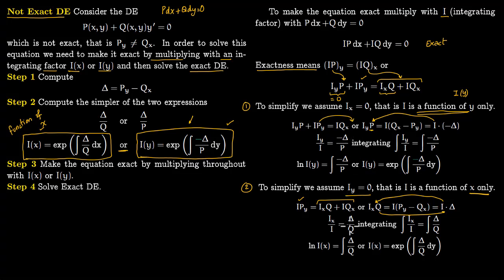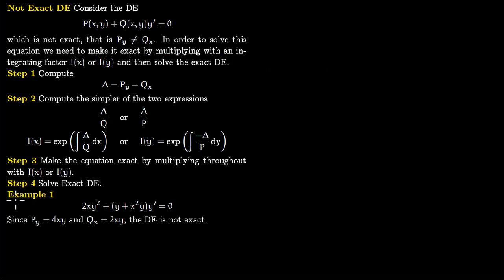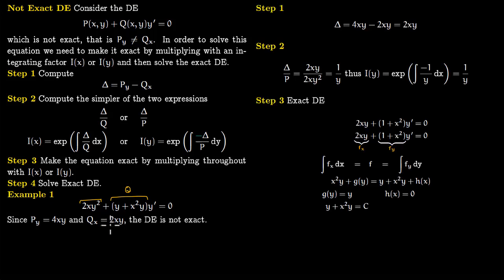These two formulas guarantee the equation becomes exact by definition of how they were derived. Now let us look at two examples. The first example is a given differential equation. We first check whether it is exact by taking the partial of P with respect to y, which gives 4xy, and the partial of Q with respect to x, which gives 2xy. Since these are not equal, the equation is not exact.